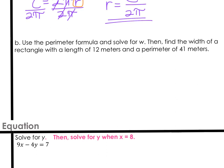We all know not every formula is going to be that easy to work with, so let's try a different one. It says use the perimeter formula and solve for W. Then find the width of a rectangle that has a length of 12 and a perimeter of 41. The first thing we're going to do is use the perimeter formula and solve.